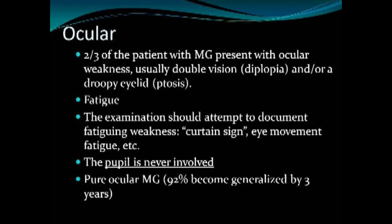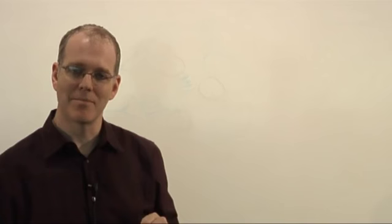An important point: myasthenia involves the nicotinic receptors, which are on muscle. There is no involvement of the muscarinic system. So when we think about the eye, it may even look like a third nerve palsy — the eye may be out, with severe ptosis — but the pupil is never involved in myasthenia. The reason is that pupil constriction uses a muscarinic receptor. The pupil is not involved in myasthenia because that's muscarinic.